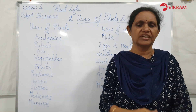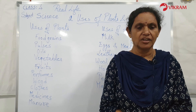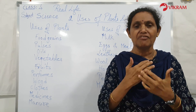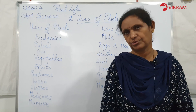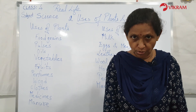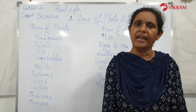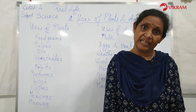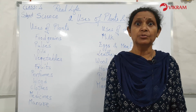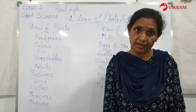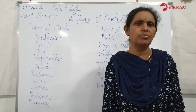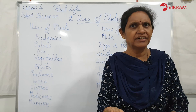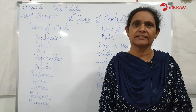Thus, plants and animals play a very important role in our lives. They provide us with many useful things and are our natural resources. We should grow more plants and look after all animals, because they help us survive in a better way by giving us food and so many other things.